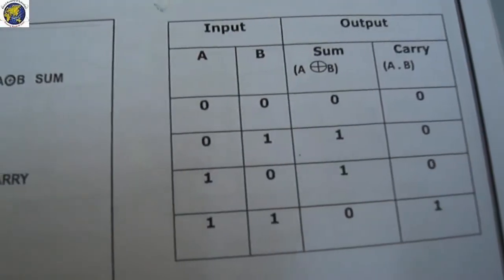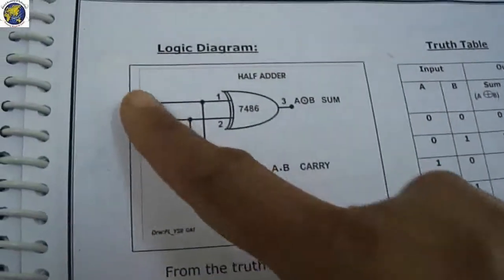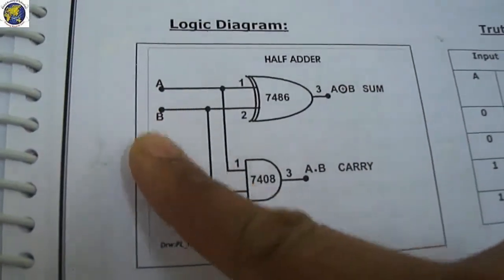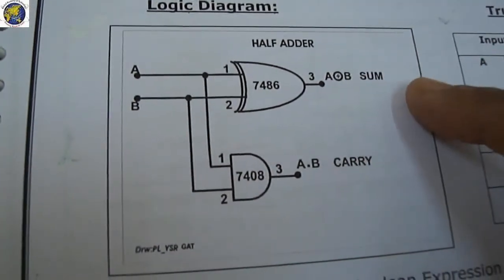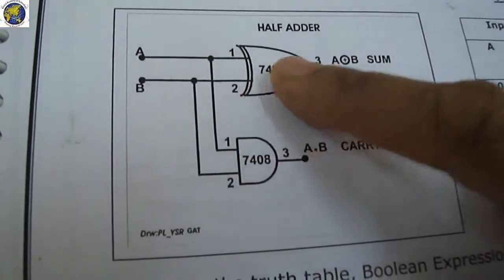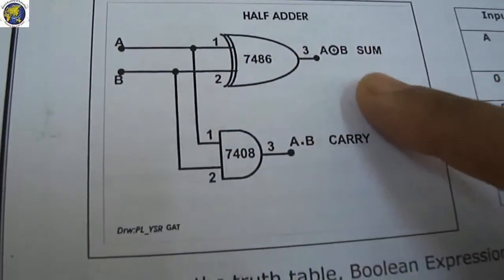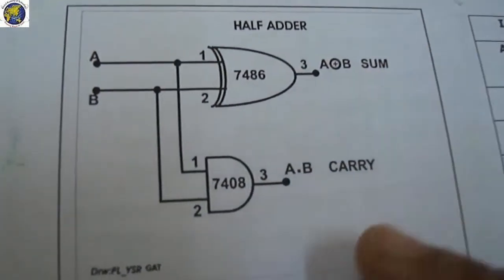In this experiment A and B are the inputs, two binary inputs, and we'll get the sum and carry output. The 7486 XOR gate output is A XOR B, and the 7408 AND gate output is A into B.